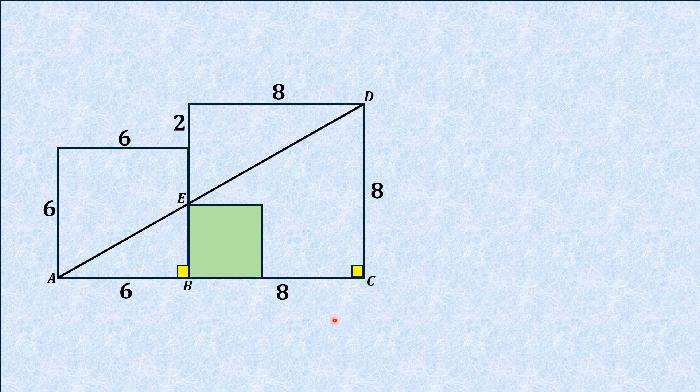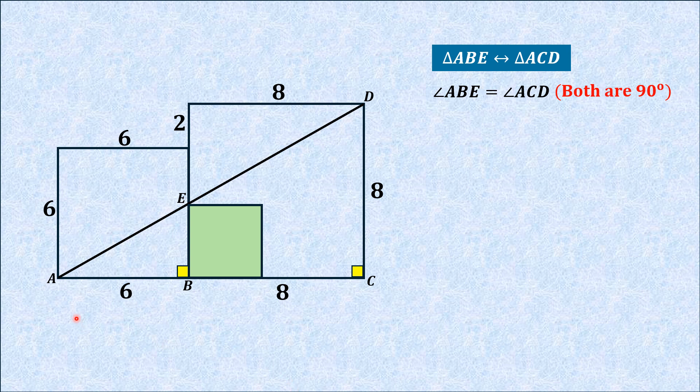Now we're interested in these two triangles ABE and ACD. We find the correspondence between triangle ABE and larger triangle ACD. Angle ABE equals angle ACD because both angles are 90 degrees. Moreover, angle EAB equals angle DAC.